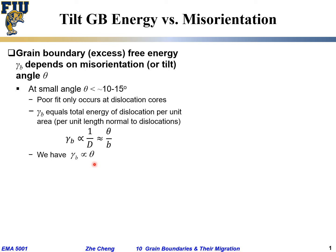The larger the tilt angle, the larger the grain boundary energy. For a given system, the Burgers vector of the dislocation is often a constant. When the tilt angle is larger than 10 to 15 degrees, what people observe is that the arrangement of atoms along the grain boundary is so disrupted that we now have a relatively open structure along the grain boundary.